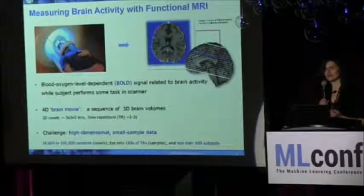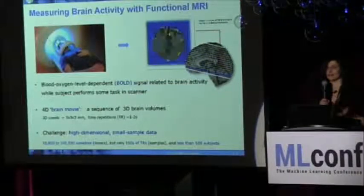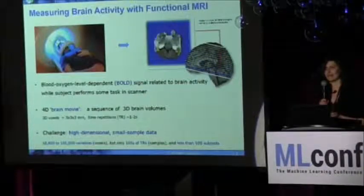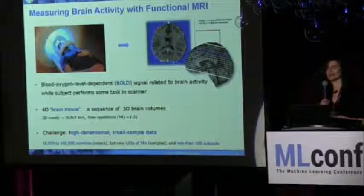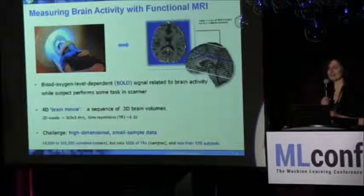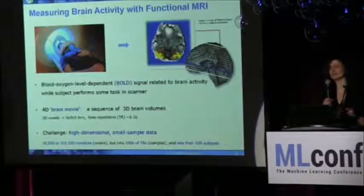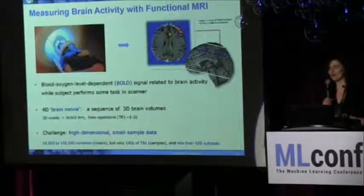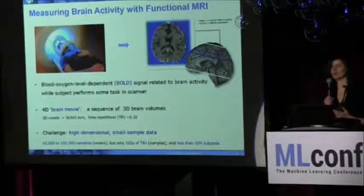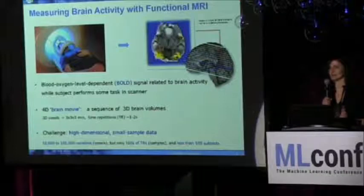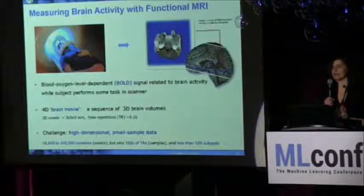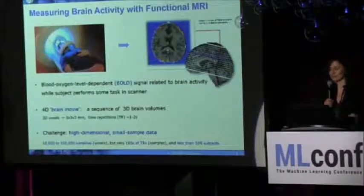It has a relatively good combination of spatial and temporal resolution, because it scans your brain every one or two seconds and gets relatively small voxels. The challenge for data analysts, whether you use classical approaches or machine learning techniques, is that the data are very high dimensional — up to 100,000 voxels — but the number of samples is limited, typically a few hundred time points or less than 100 subjects per study.